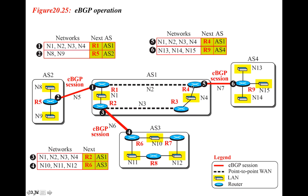For the other side, if we want to reach N1, N2, N3, or N4 we have router R4 which is in AS1. If we want to reach N13, N14, N15 from this side then we have to go through R9 which is in AS4, and the same thing will take place for this side.